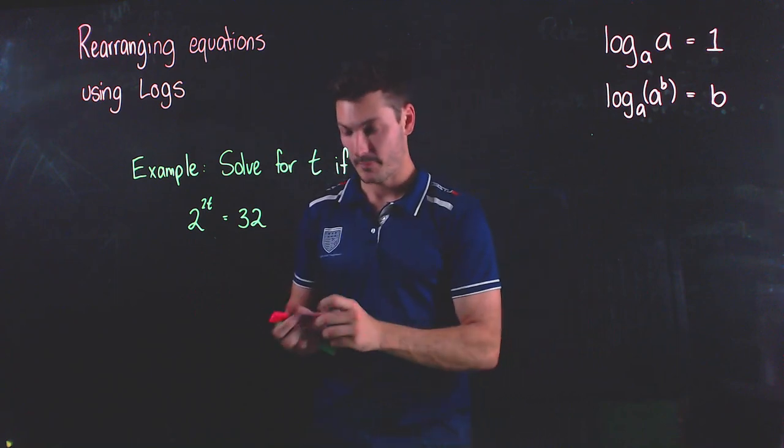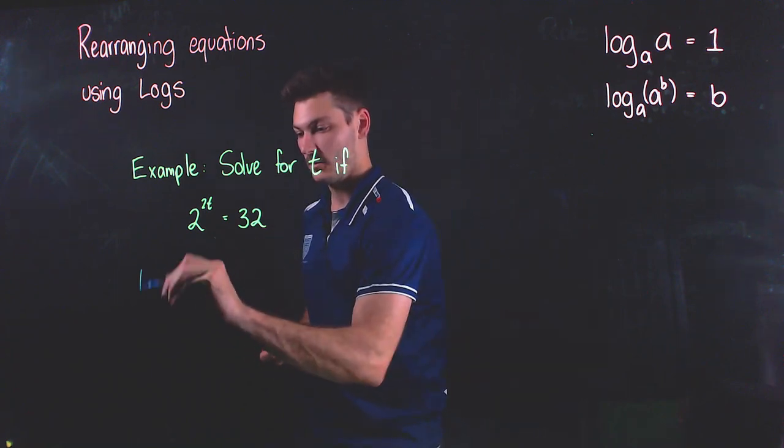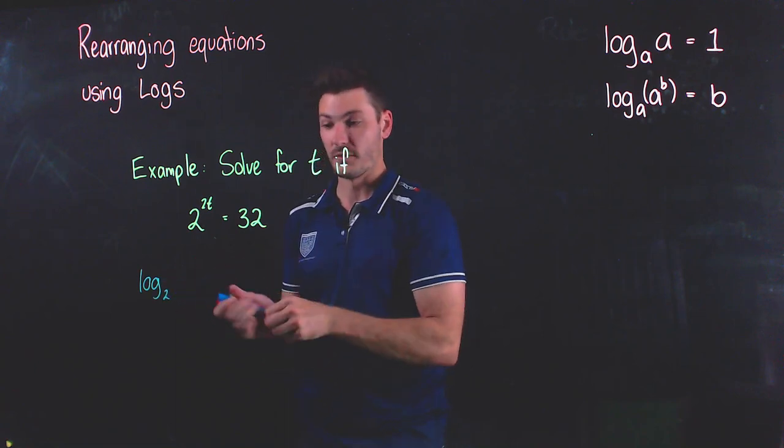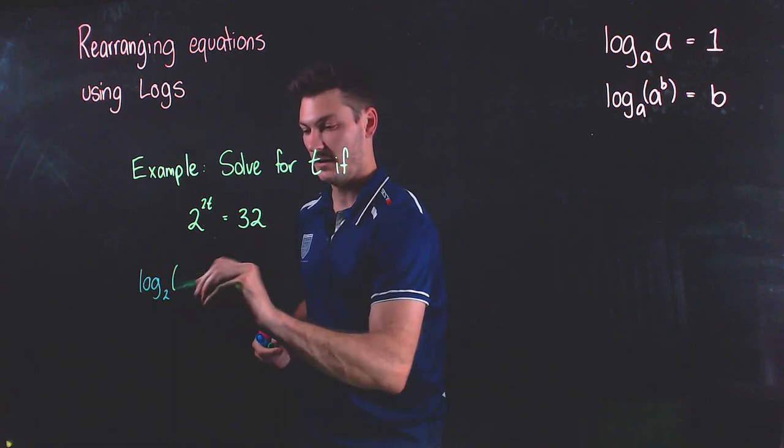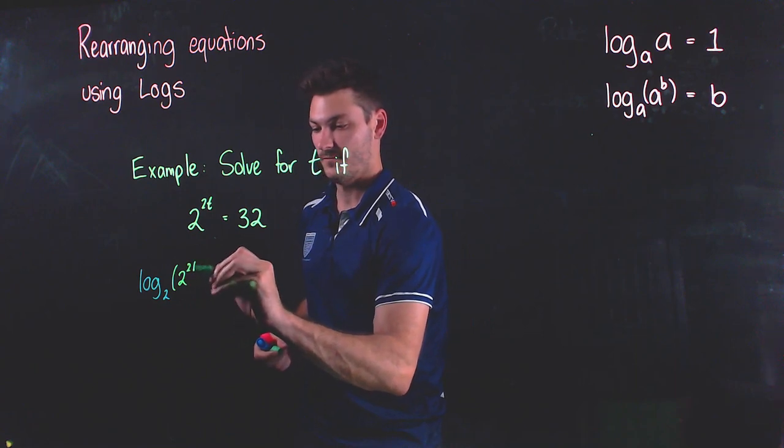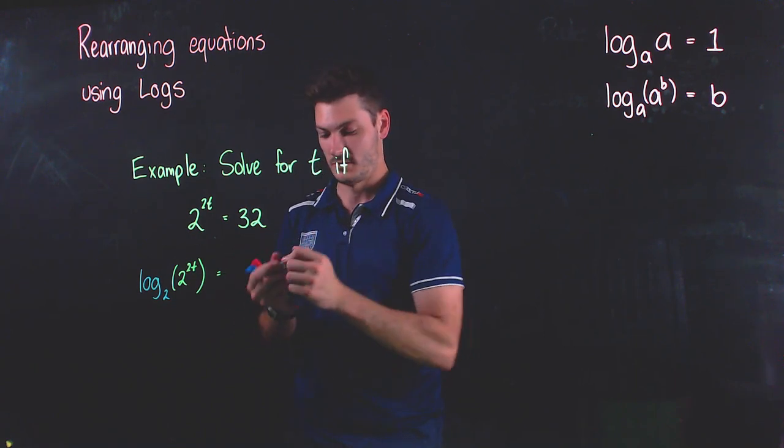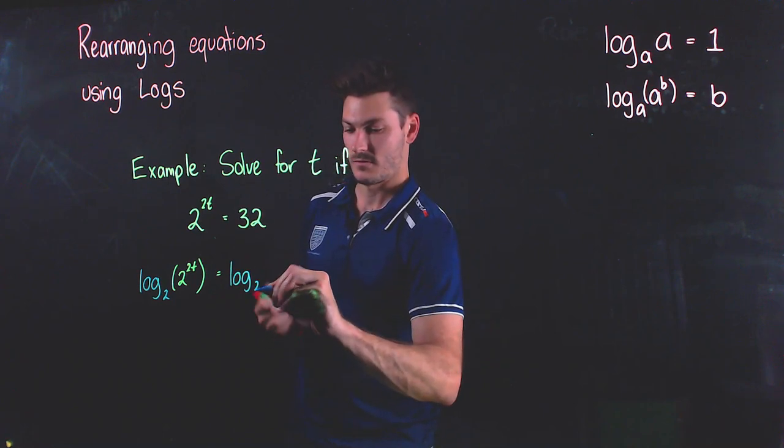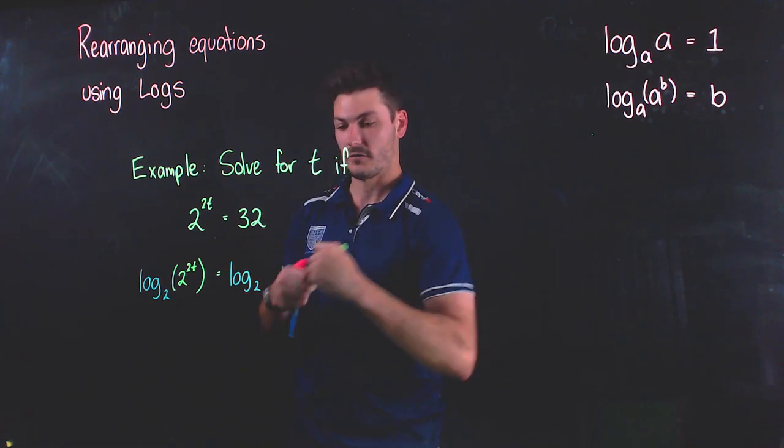So I'm going to write that in blue here and green. I'm going to say log base two of both sides, so we get two here, two to the two t is equal to log base two of 32.